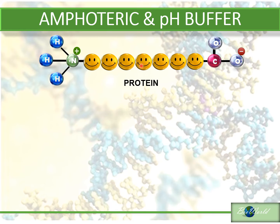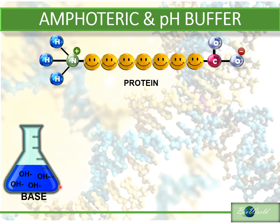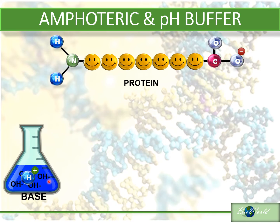Now that you understand the zwitterion nature of protein, let us see how protein responds when placed in solutions of different pH. We will start with a basic solution. Basic solutions will have high concentration of negatively charged hydroxyl ions. The protein when placed in this solution will release hydrogen ions into the solution. The positively charged hydrogen ions will react with the negatively charged hydroxyl ions to form water. In this way the basic solution's pH will be maintained. However, notice that now the protein has become negatively charged — so proteins when placed in a basic solution become an anion.